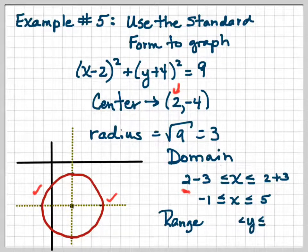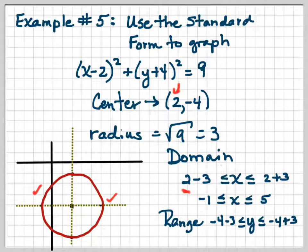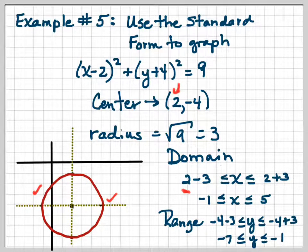The range, now we're going to take, instead of the x coordinate, we're going to take the y coordinate of the center, which is negative 4. And we're going to subtract 3 and then add 3. So we'll have negative 7 and negative 1. And you can see that, once again, it's from negative 1 to negative 7. So you can do it visually and you can do it algebraically. I expect you to be able to do both.